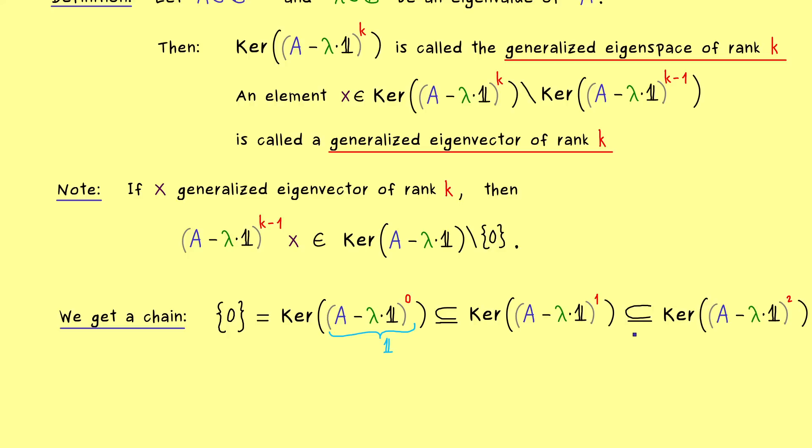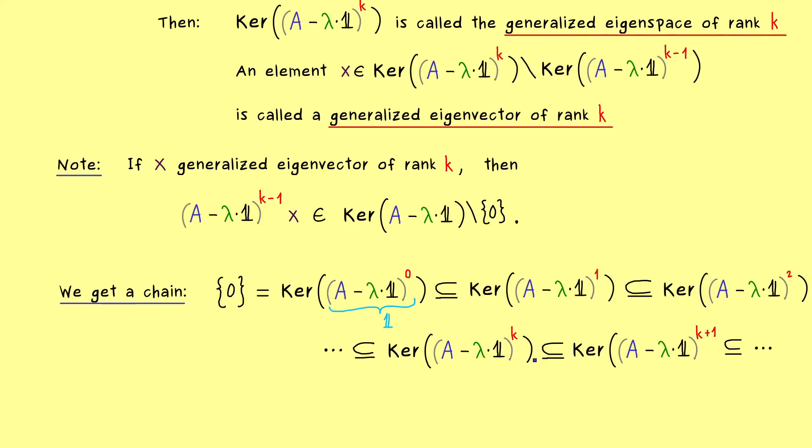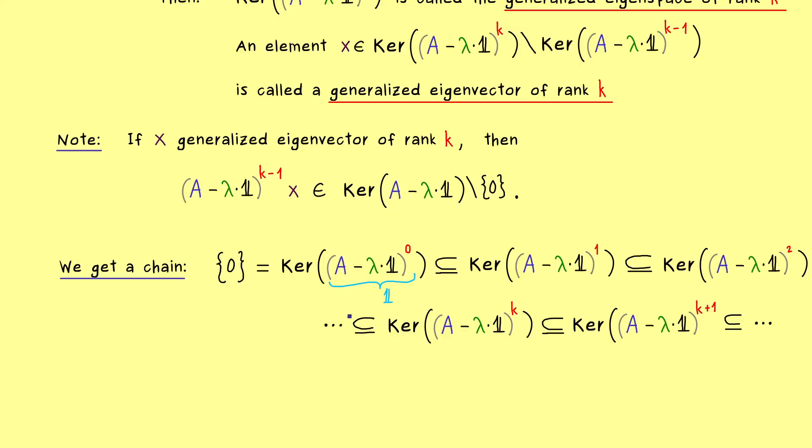However, there it could definitely happen that the space stays exactly the same, which means we only have the subset relation that includes equality as well. So in general we cannot say more, but we definitely always have the subset relation if we increase the index k. So we could write, if we go from k to k+1, we have this inclusion. So this means we could increase the index as much as we want, but at some point nothing will happen anymore.